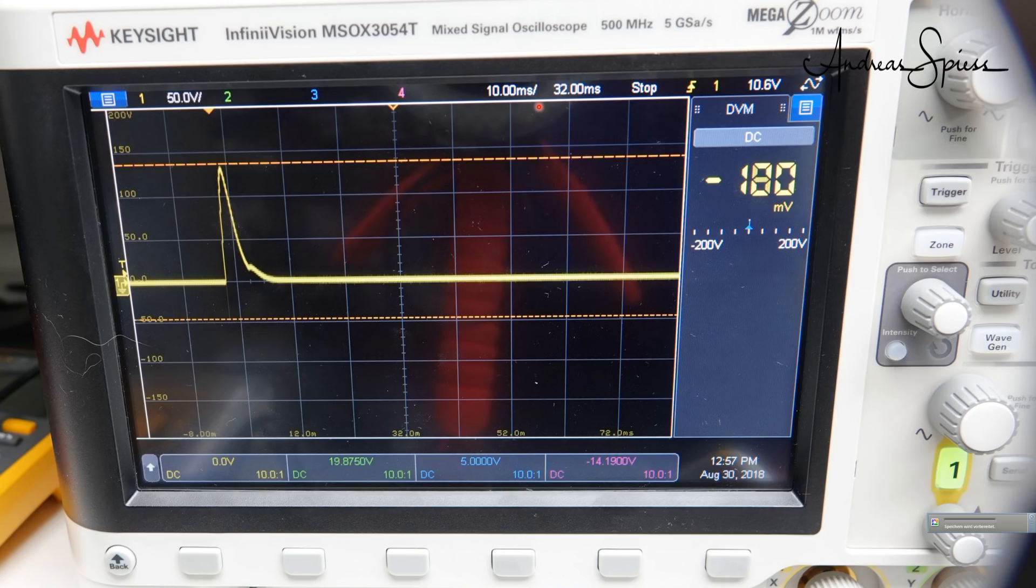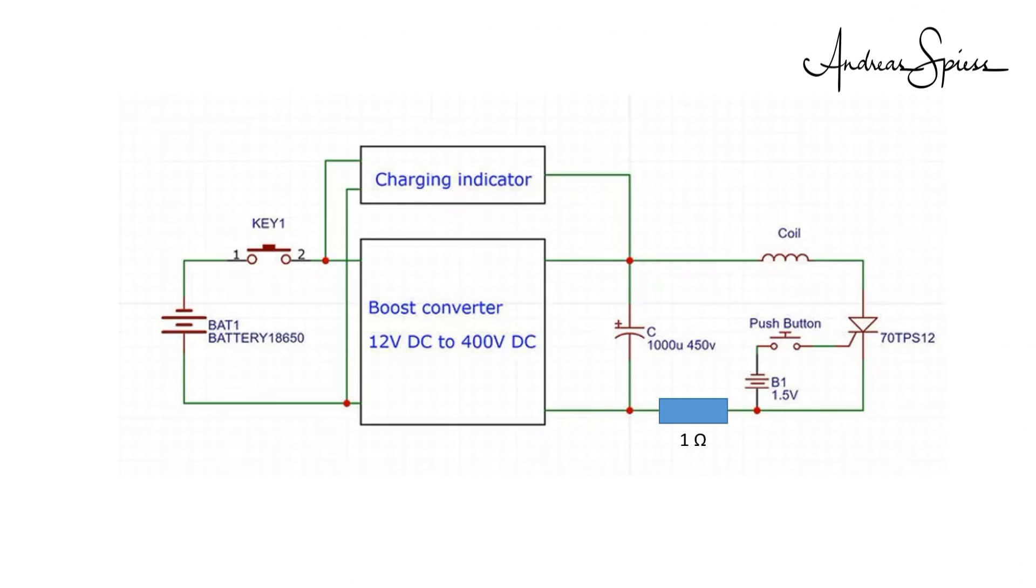Looking at the diagram, we see a capacitor, a shunt resistor, the thyristor, and the coil. The total resistance is 400 volts divided by 130 ampere equals around 3 ohms. One ohm comes from the shunt, which is quite a lot. The other comes from the internal resistor of the capacitor, the thyristor, the wires, and the coil itself. You can imagine that the current was even higher when I removed the shunt resistor.